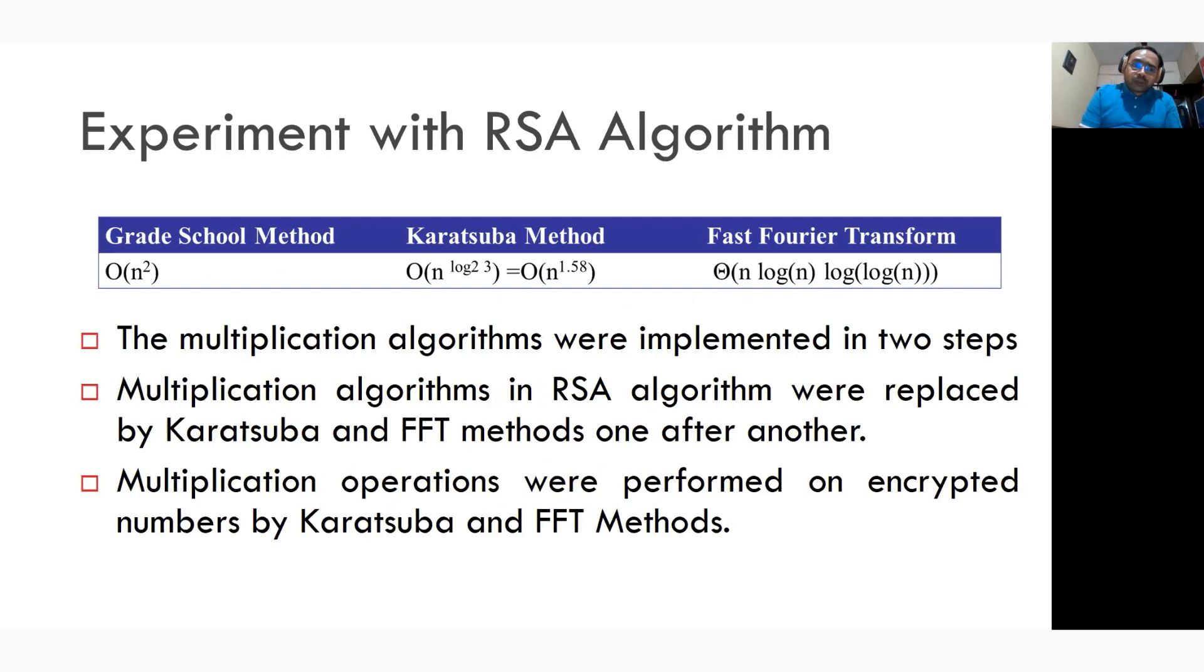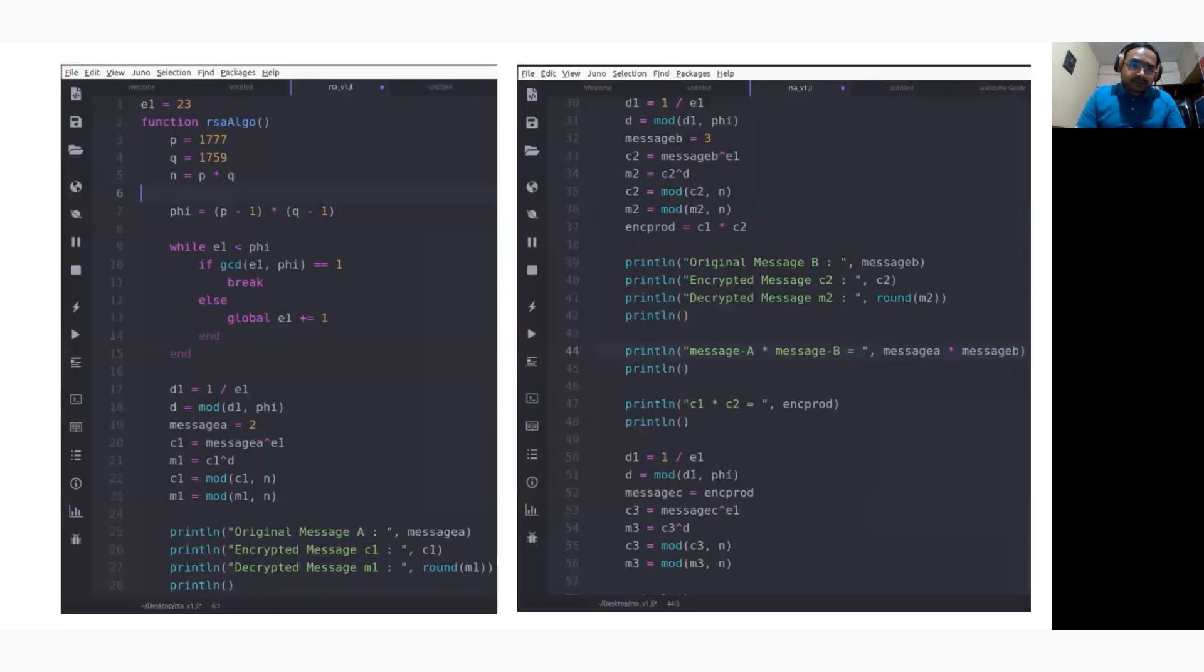So what we have done here is, multiplication algorithms in RSA were replaced by Karatsuba and FFT methods, one after the other. Then multiplication operations were performed on the encrypted numbers by Karatsuba and FFT methods. This slide clearly shows the implementation of RSA algorithm in Julia.